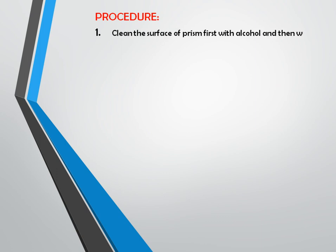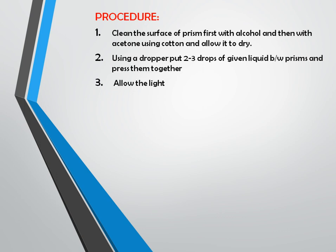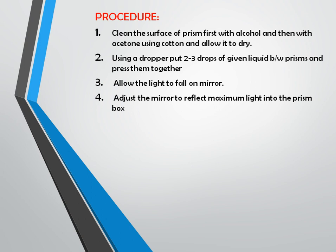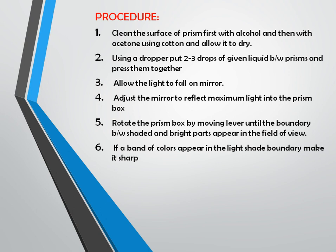Procedure for measuring refractive index: first, clean the surface of the prism with alcohol and then acetone using cotton, and allow it to dry. Then, using a dropper, place two to three drops of your sample between the two prisms. Allow light to fall on the mirror and adjust the mirror to reflect maximum light onto the prism box. Then rotate the prism box by moving the lever until the boundary between the shaded and bright parts appears in the field of view. If a band of color appears at the light-dark boundary, make it sharp by rotating the compensator.